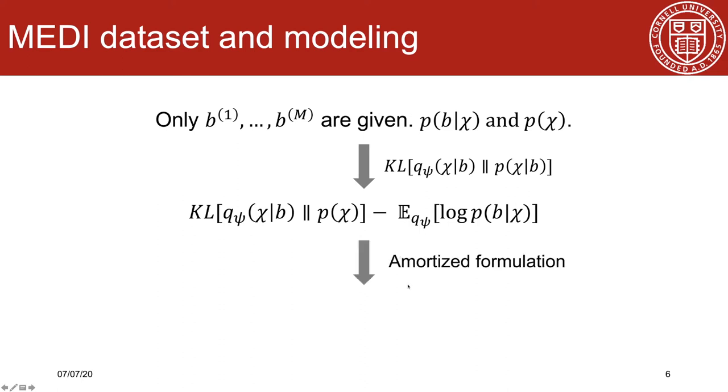Minimizing this KL divergence across the MEDI train dataset, we get the amortized formulation, which is so-called amortized variational inference.